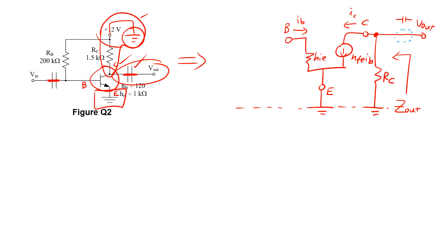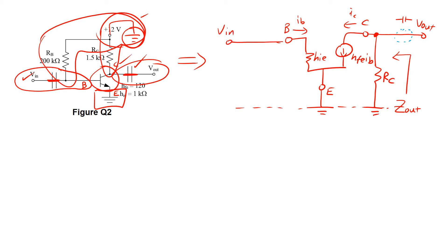We then go on to the base terminal. For the base terminal, again we see there are two branches. One branch has a short circuit towards V-in here. At the input side, roughly around this region, this is the former location of the capacitor which has been replaced by a short circuit. Directly below this, we point this input impedance inwards.